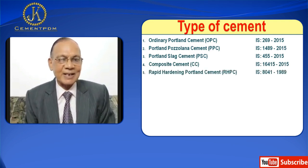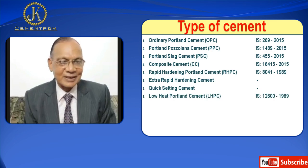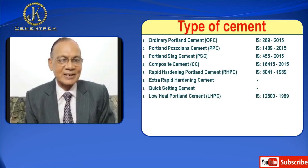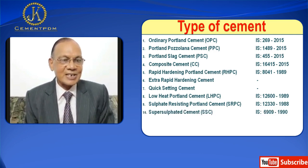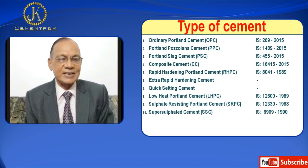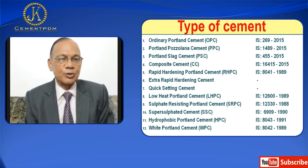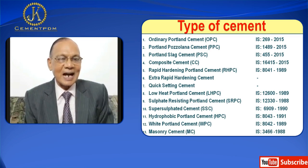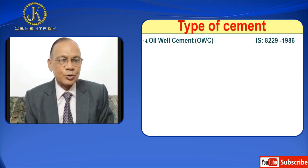Next is Extra Rapid Hardening Cement. Seventh is Quick Setting Cement. Eighth is Low Heat Portland Cement, LHPC — IS 12600-1989. Then we have Sulphate Resisting Portland Cement, SRPC — IS 12300-1988. Number ten is Super Sulphated Cement, SSC — IS 6909-1990. Next is Hydrophobic Portland Cement. Next is White Portland Cement, WPC — IS 8042-1989. Thirteen is Masonry Cement — IS 3466-1988. Next is Oil Well Cement, OWC — IS 8229-1986.